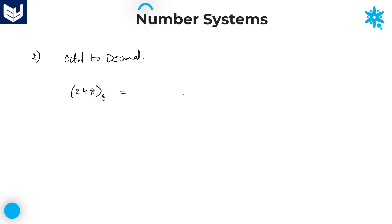Here also, place values are very important. The digits in the number are 2, 4, 8. Place values start with 8 power 0, and while going from right side to left side, the place values increase: 8 power 0, 8 power 1, 8 power 2.